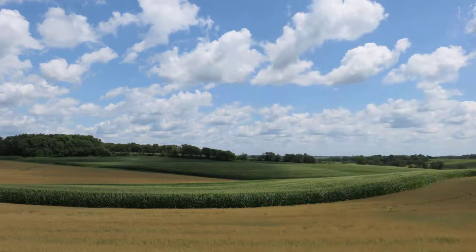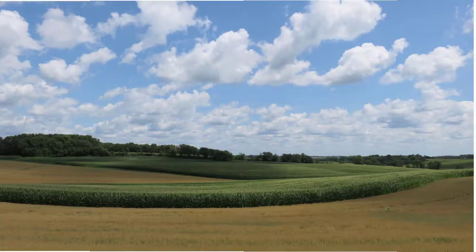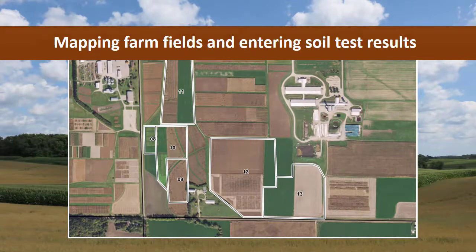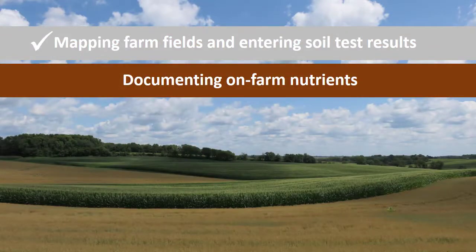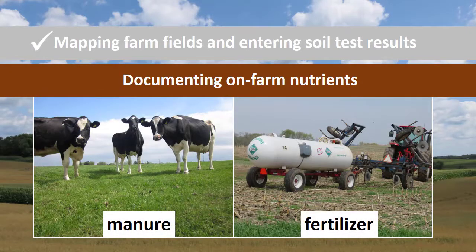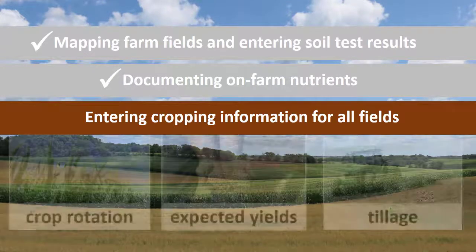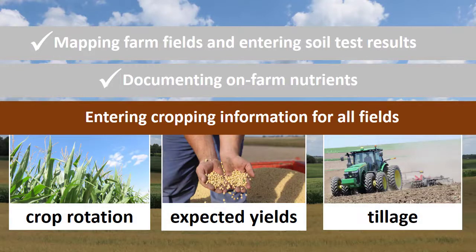Let's start with a brief overview of the process and what SNAP Plus needs to get started. First, the planner maps all of the farm's fields and enters soil test results. Second, the farm's nutrient resources are documented, like manure and fertilizer. Third, planned crop management for each field is entered, like the multi-year crop rotation, expected yields, and tillage practices.